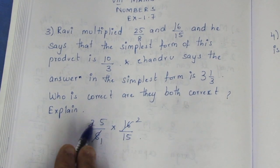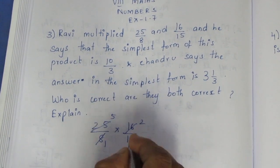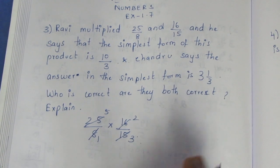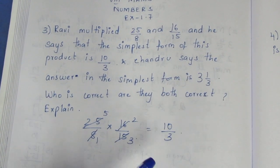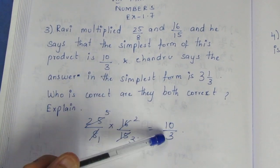We cancel by 5: 25 divided by 5 is 5, and 15 divided by 5 is 3. The result is 10 by 3, which is the correct answer.